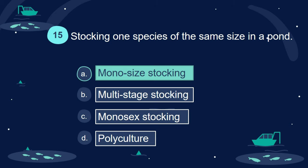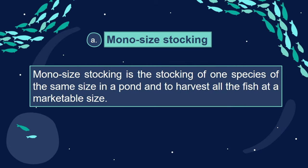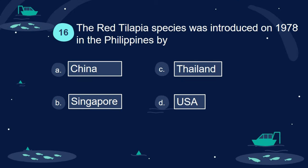Answer: A. Mono-size stocking. Mono-size stocking is the stocking of one species of the same size in a pond and to harvest all the fish at a marketable size.